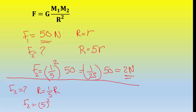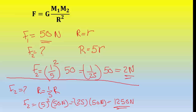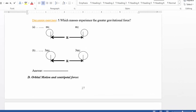So you apply 25 times 50 Newtons, which yields 1250 Newtons. The force increases from 50 Newtons to 1250 Newtons when the distance is reduced to one-fifth.